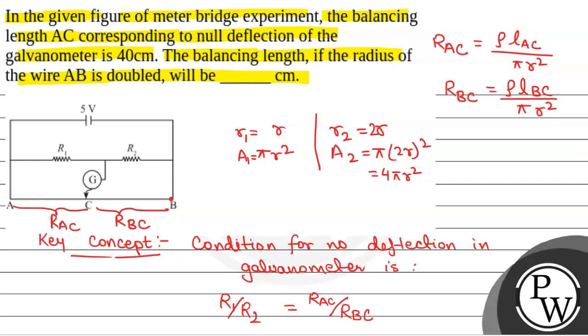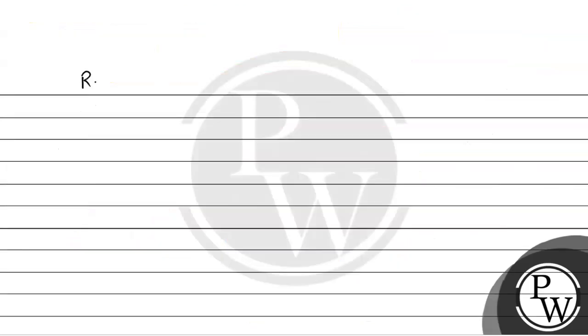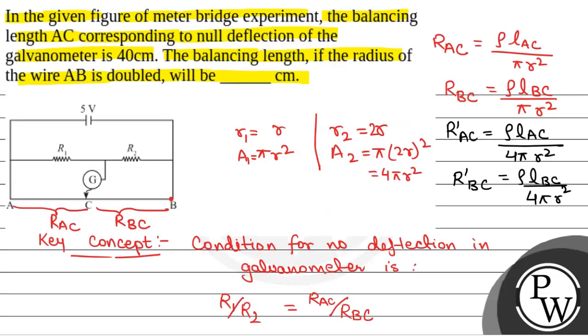So R dash AC will be equal to Rho into LAC by 4 pi R square, and R dash BC will be equal to Rho into LBC by 4 pi R square, because the constant factors will cancel.